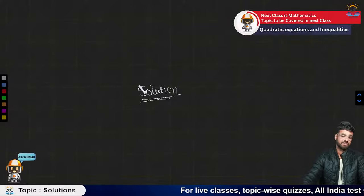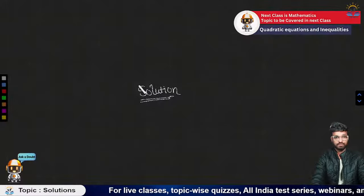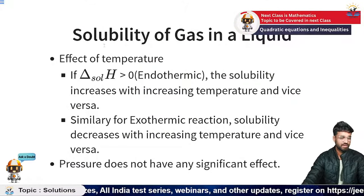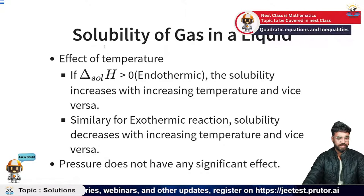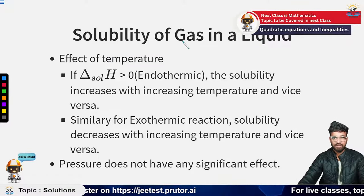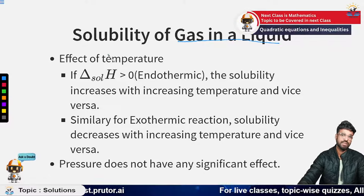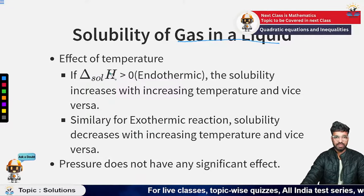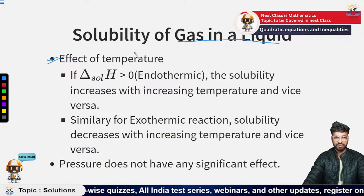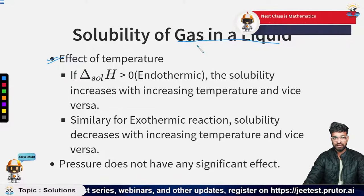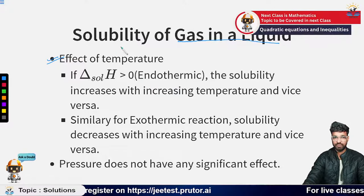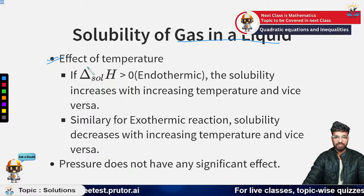Let us start this chapter. First, we will look at the solubility of a gas in a liquid — how solubility is affected by pressure, temperature, and other factors. We will first consider the effect of temperature, and then the effect of pressure, for both gas in a liquid and solid in a liquid.